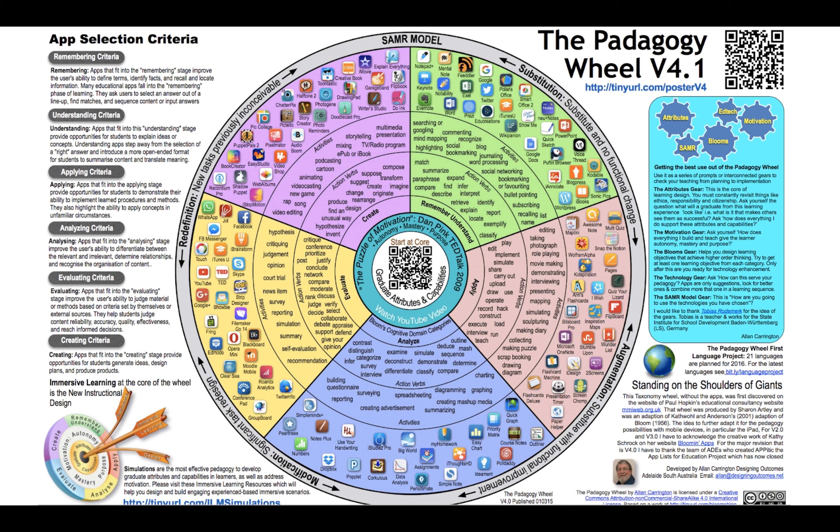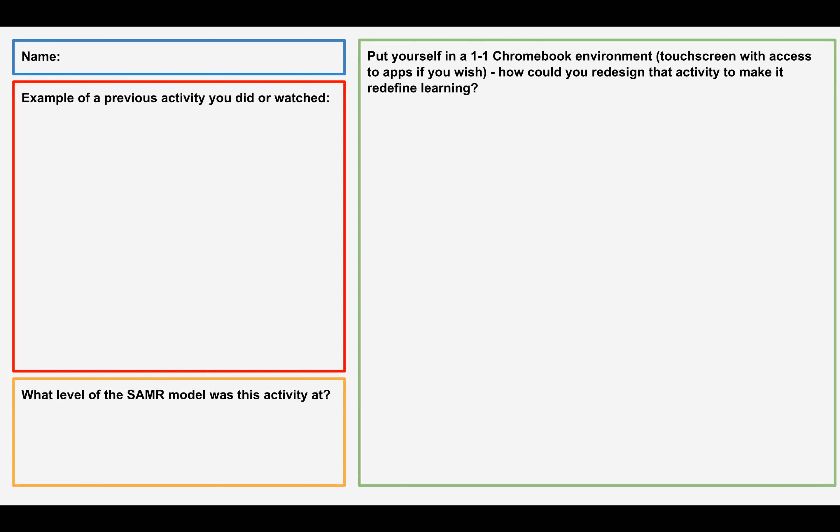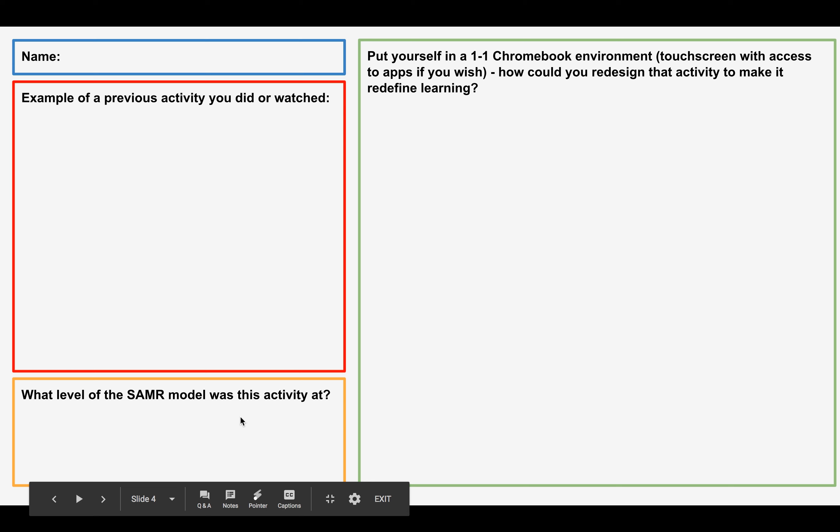However, we want to encourage teachers to explore more than what's out there already and to truly innovate for their students. One way to do this is to provide teachers with a template such as this, used in a collaborative exercise in a staff meeting. Teachers can write their name at the top and then write down a previous example or activity that they have done in their practice or that they've seen before, and then analyze what level of the SAMR model this activity was at.